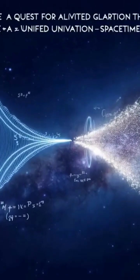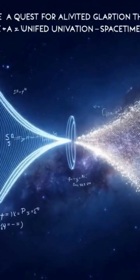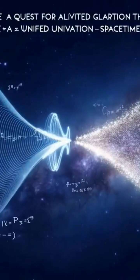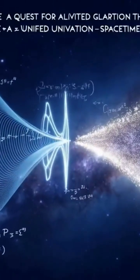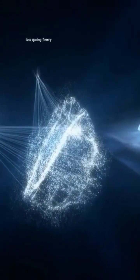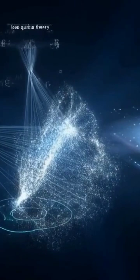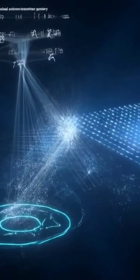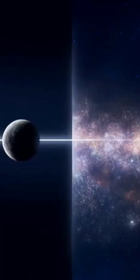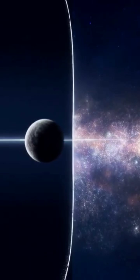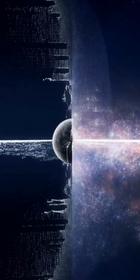Physics is built on two pillars. General Relativity describes gravity as the curvature of space-time on large scales. Quantum Mechanics governs the probabilistic world of atoms and particles. Each is spectacularly successful in its own domain.